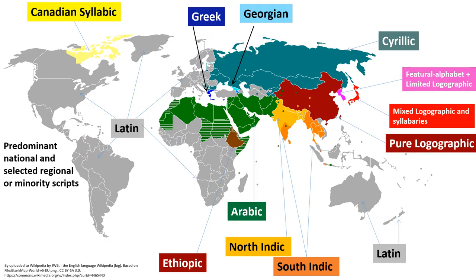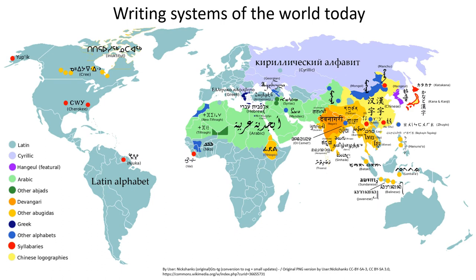As gradually the methods of writing appeared and were invented, languages also appeared. Some of the main language families are shown here. Every language got its own script of writing and storing information. In this slide, the map of main writing systems of the world today are shown and listed on the left side of the slide.